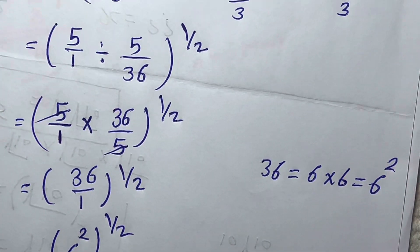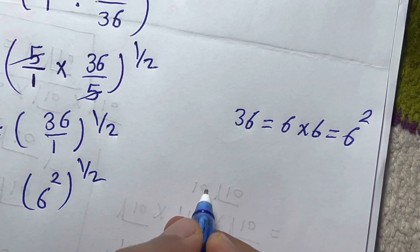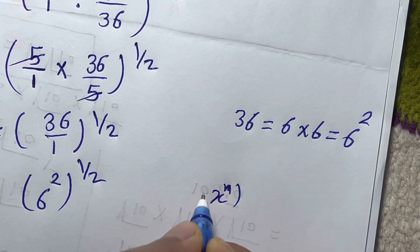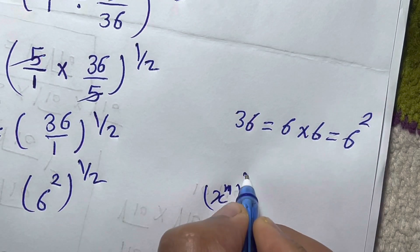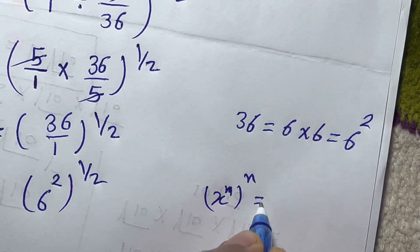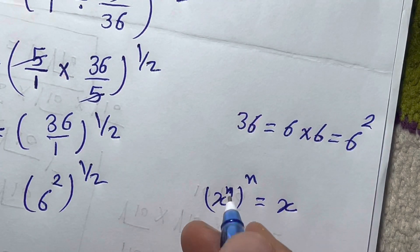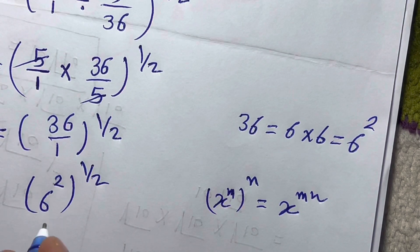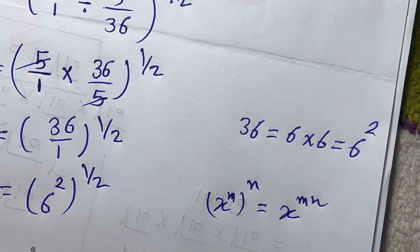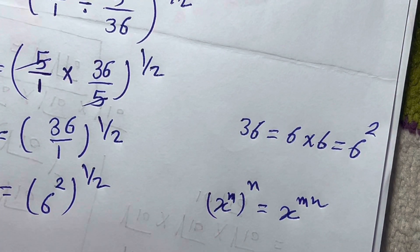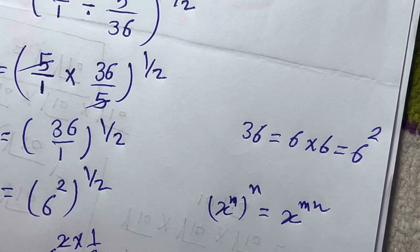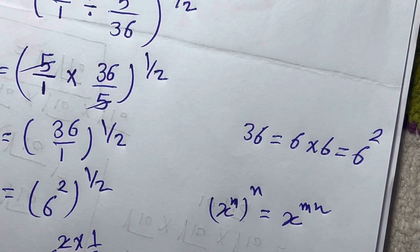Using the exponent property: if you have x to the power of m, all raised to the power of n, you multiply m by n. So here, two times one over two equals one. The final answer is six.